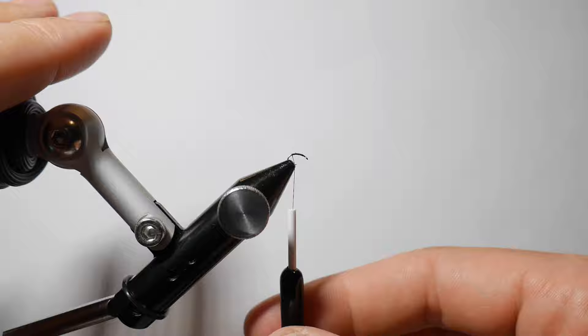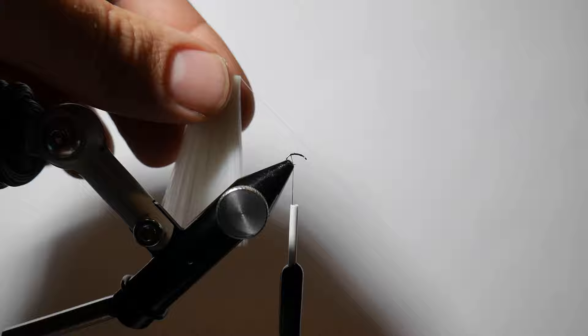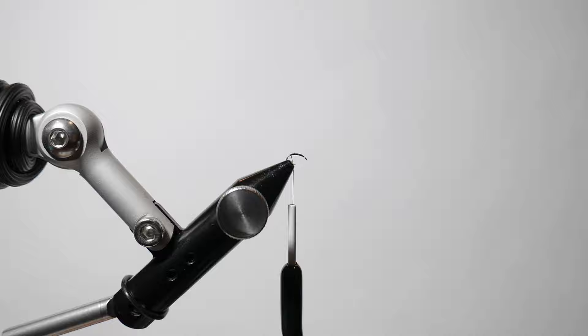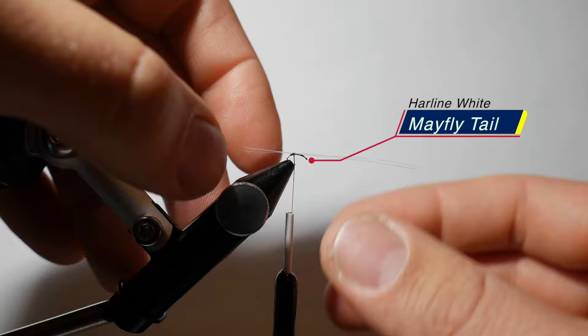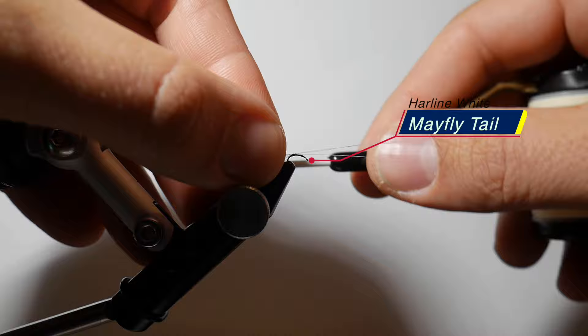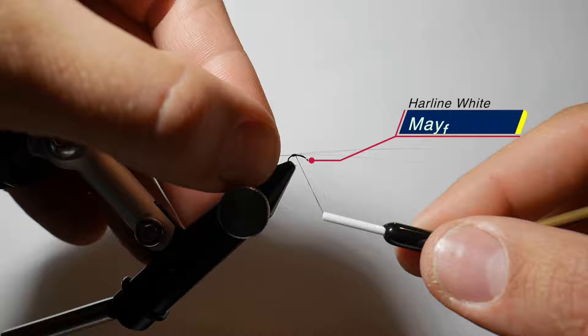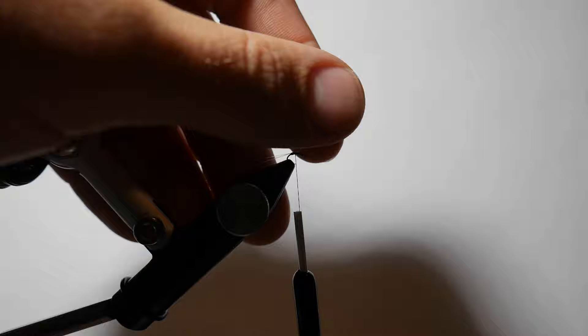All right, so I have a bundle of these Hairline Mayfly Tails. They're very thin tails. I'm going to grab about three in my hand and I'm going to line them up on the near side of the hook and I'm going to wrap a thread wrap around them just to bring them on top of the hook, get them situated to exactly where I want them, and then just continue rolling that thread around, headed back towards the back of the hook. And then come forward and I will now snip the tag ends off close.